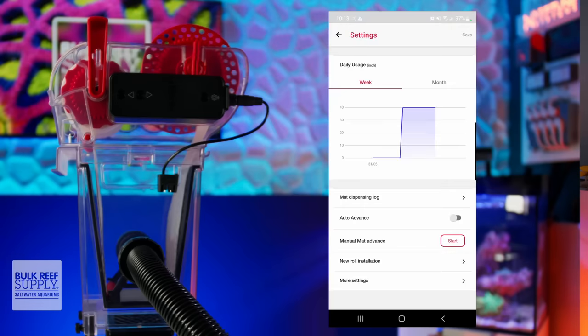You can even tap through to see an expanded graph of usage for the week, as well as for the month, view the mat dispensing log, turn auto advance on or off, tap to manually roll up some fleece, and reset the remaining fleece counter when adding a new roll.